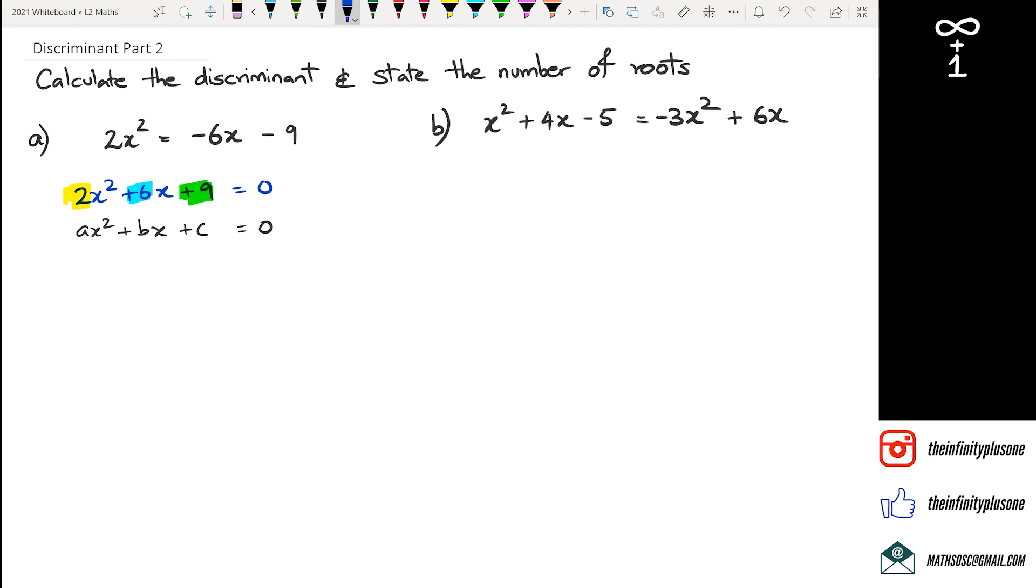So what I'm going to do is work out b² - 4ac, which is the discriminant. I've got here 6² - 4 × 2 × 9. This is going to give me 36 - 72.